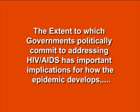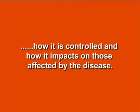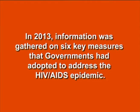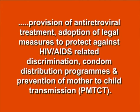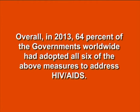Regarding HIV/AIDS, the extent to which governments politically commit to addressing HIV/AIDS has important implications for how the epidemic develops, how it is controlled, and how it impacts those affected by the disease. In 2013, information was gathered on six key measures that governments had adopted to address the HIV/AIDS epidemic. These included routine screening of blood supply; information, education and communication campaigns on the prevention and treatment of HIV/AIDS; provision of antiretroviral treatment; adoption of legal measures to protect against HIV/AIDS-related discrimination; condom distribution programs; and prevention of mother-to-child transmission. Overall in 2013, 64% of governments worldwide had adopted all six of the above measures to address HIV/AIDS.